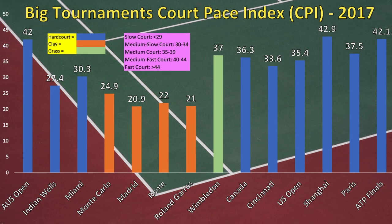Let's look at those speeds now. There's a really interesting graph here — this is the Court Pace Index for all the top events in 2017. Unfortunately I couldn't find a complete listing from a more recent year, but these figures are accurate. The CPI doesn't change too much from year to year. Let's focus on the four Majors first.